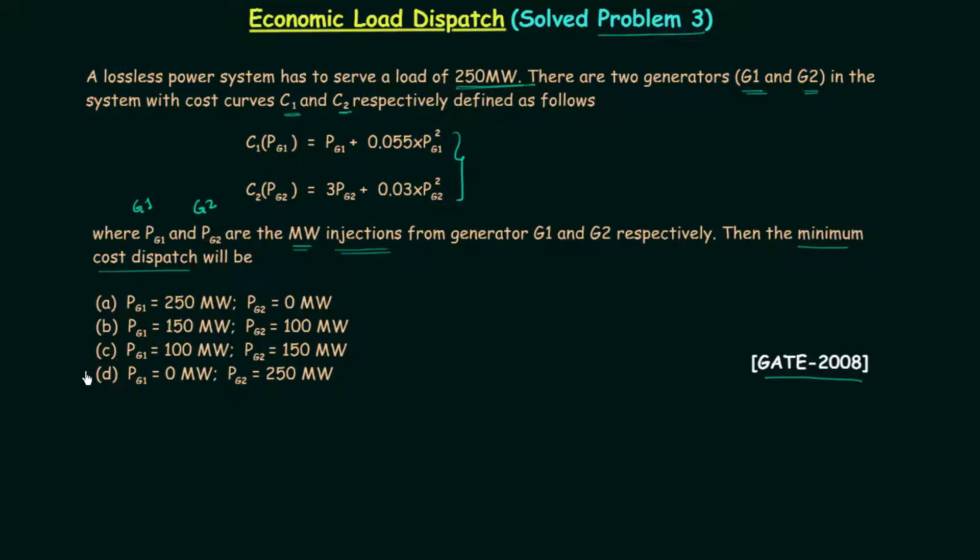You can see the four options and now we will begin with the solution. We need to serve a load of 250 megawatts. We have two generators, G1 and G2, in our system. This generator here is generator G1 and this generator here is generator G2, and together they are satisfying a load of 250 megawatts.